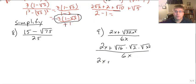So we have 2x plus, square root of 16 is 4, square root of x squared is x. So that takes care of those two, leaving me with the square root of 2 all over 6x.